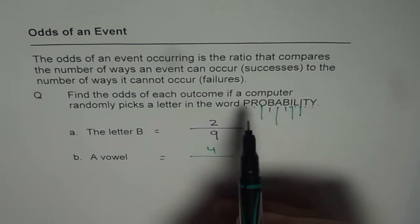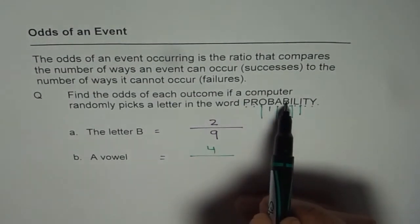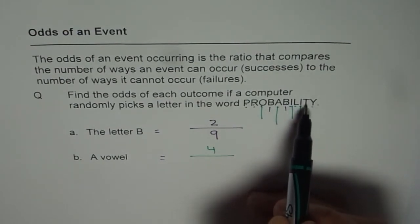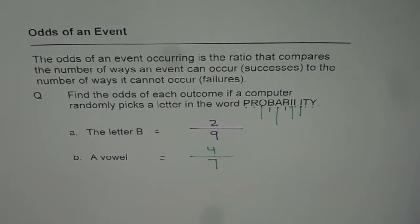How many are not in favor? Count. 1, 2, 3, 4, 5, 6, and 7. So the odds of randomly picking a vowel from the word probability is 4 out of 7.